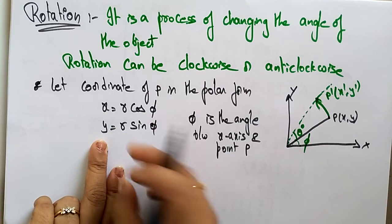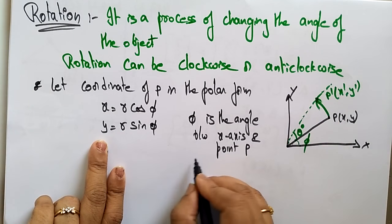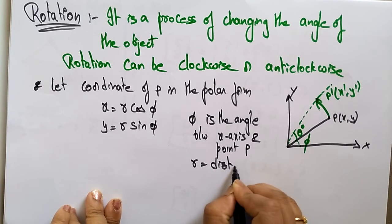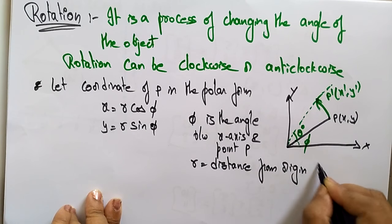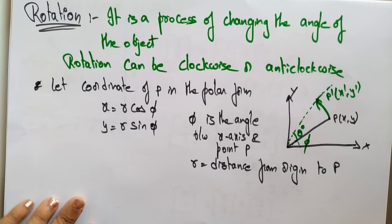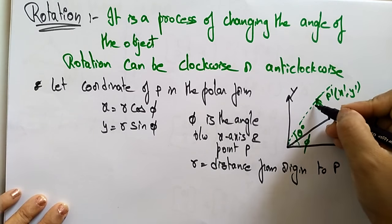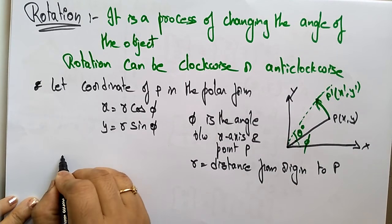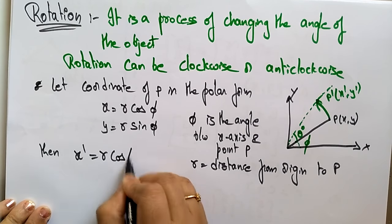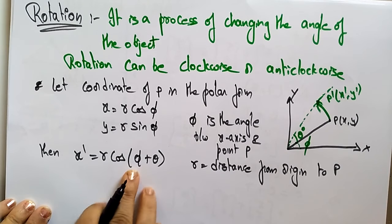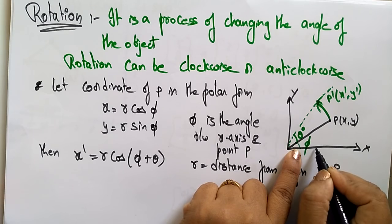Here r is the distance from the origin to point P. So x = r·cos(phi) and y = r·sin(phi) are the initial coordinates. Now I want to calculate x' and y' — the new coordinates. So x' = r·cos(phi + theta), because starting from the x-axis, phi plus theta is the total angle rotated.